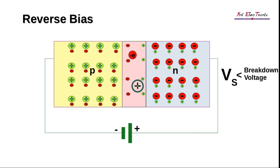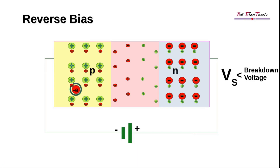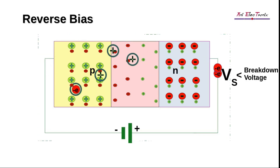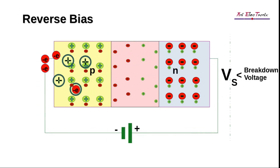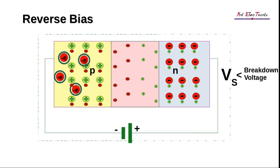Assume one electron and one hole have been produced in the depletion region due to thermal energy. The free electron is pushed towards the N-side of the depletion region, while the hole moves towards the P-side. The electron can then enter the diode from the left and recombine with that hole. In the presence of thermal energy, many free electrons and holes form and the process continues, resulting in a small current flow from the N-side to the P-side of the diode. As it is produced by the minority carriers of the diode, this reverse current is called minority carrier current.